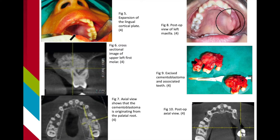Figure 9 shows the surgical enucleation of the lesion, including the removal of the involved teeth. The root of the second molar was resorbed along the lateral aspect of the lesion. The excised specimen was yellowish-white, round, had a granular texture, had a diameter of 20 millimeters, and was attached to the palatal root of the first molar.